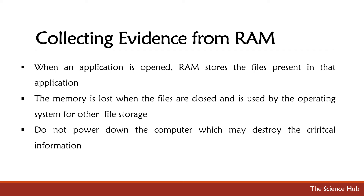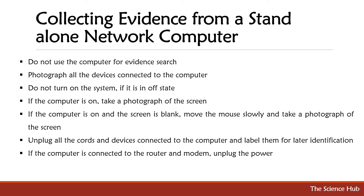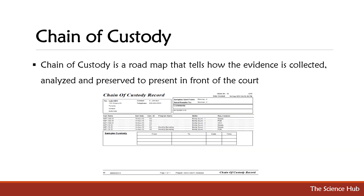Collecting evidence from a standalone network computer: do not use the computer for evidence search. Photograph all the devices connected to the computer. Do not turn on the system if it is in an off state. If the computer is on, take a photograph of the screen. If the computer is on and the screen is blank, move the mouse slowly and take a photograph of the screen. Unplug all cords and devices connected to the computer and label them for later identification. If the computer is connected to a router and modem, unplug the power. Chain of custody is the road map that tells how the evidence is collected, analyzed, and preserved to present in front of the court.